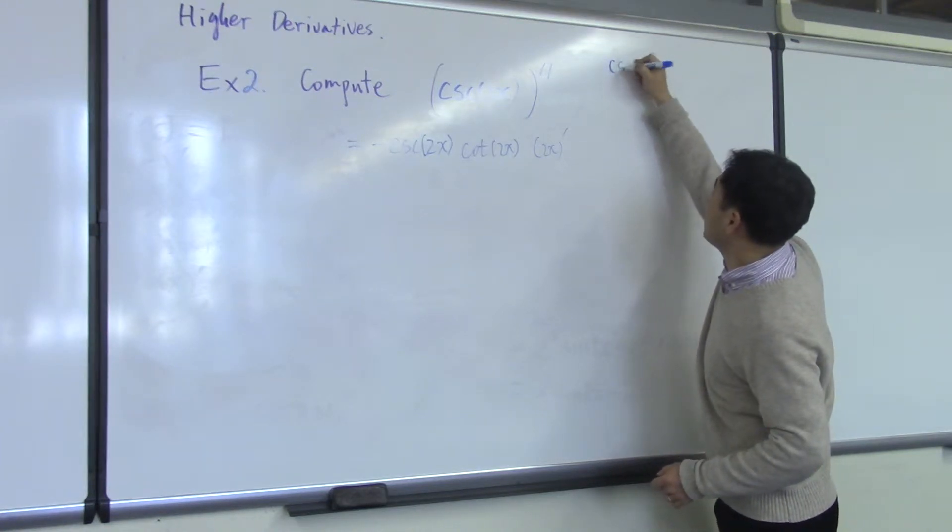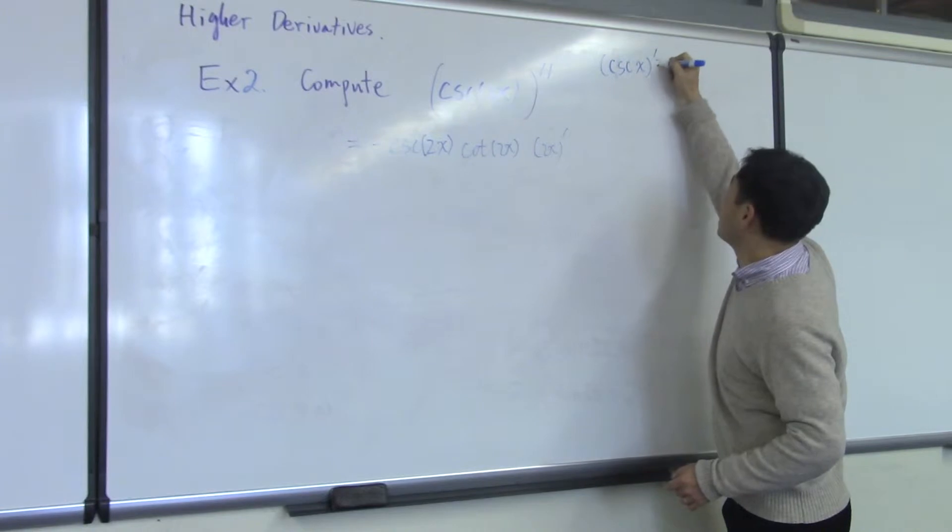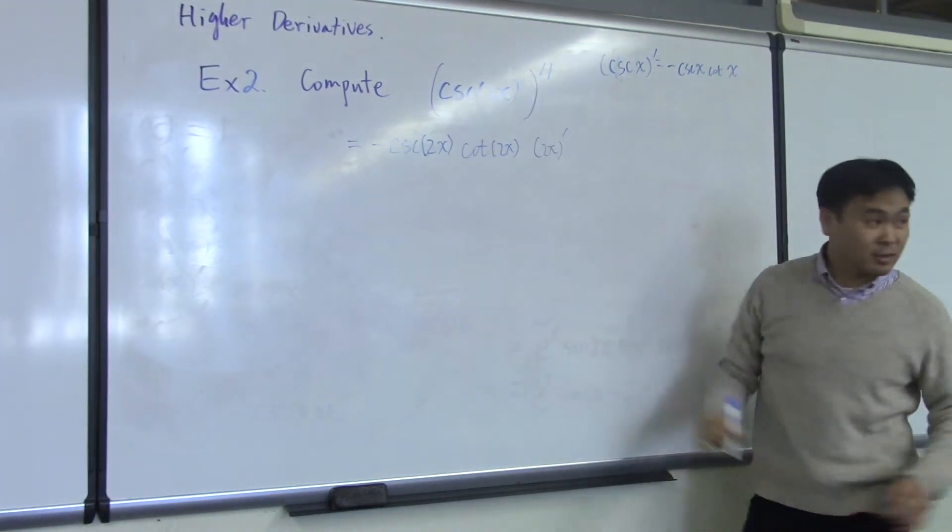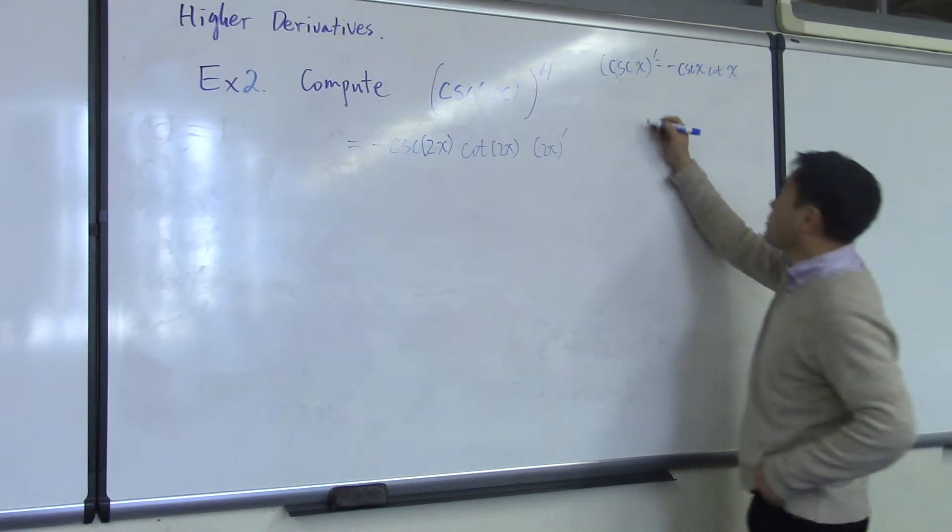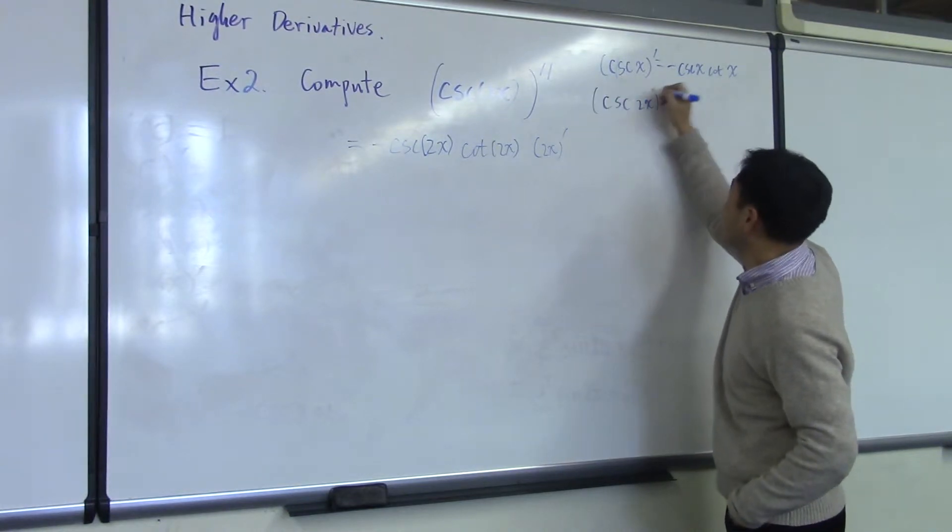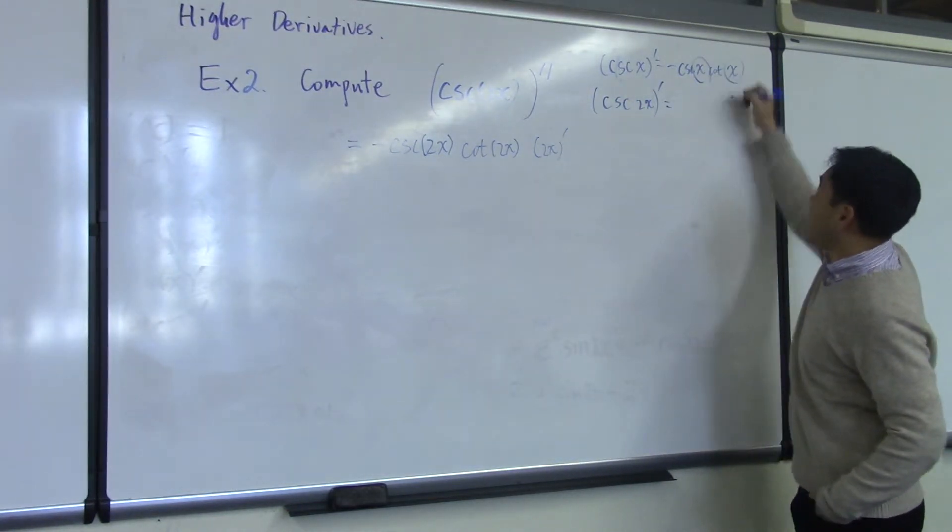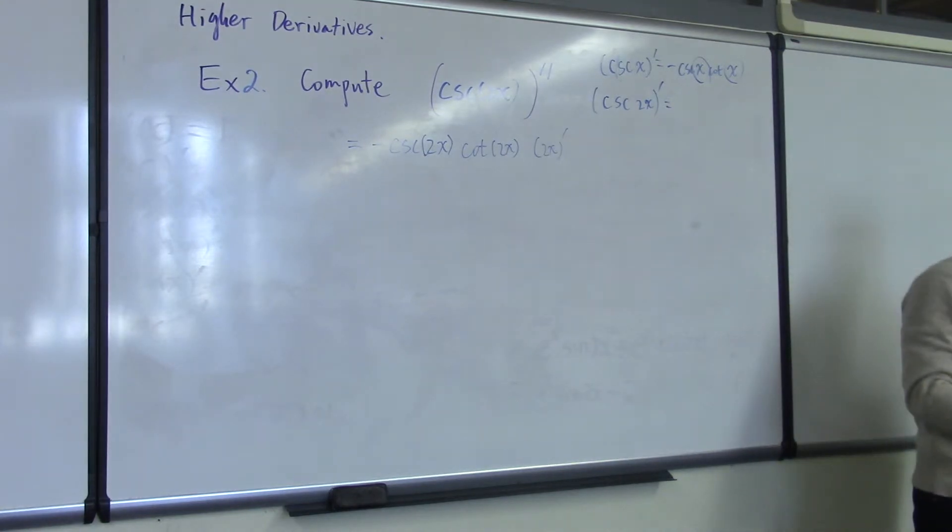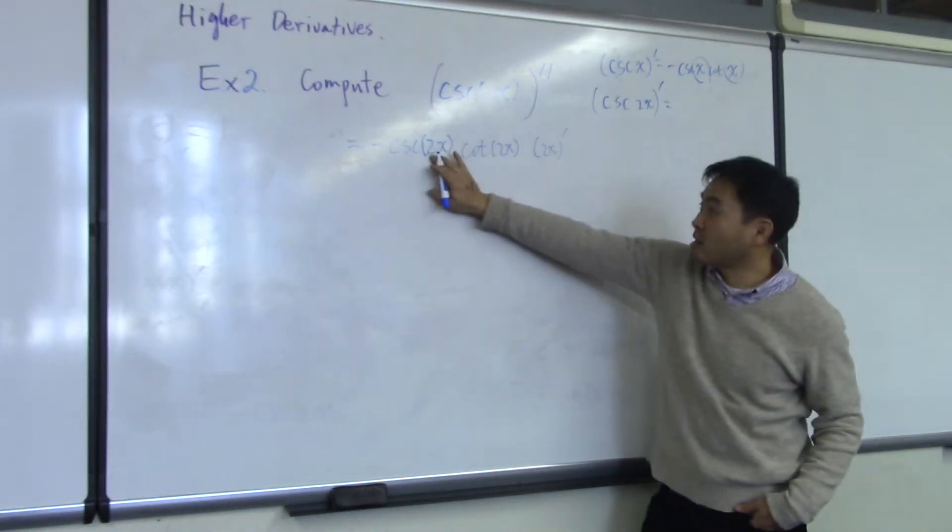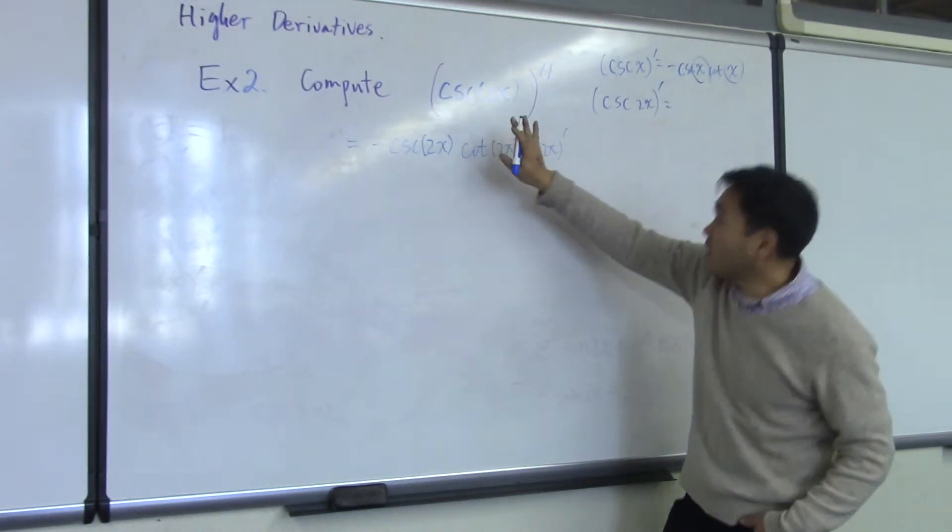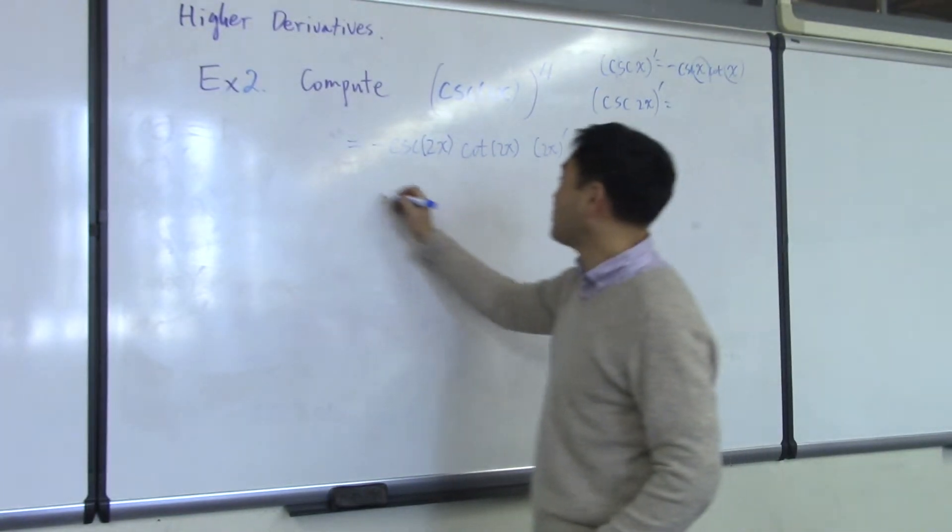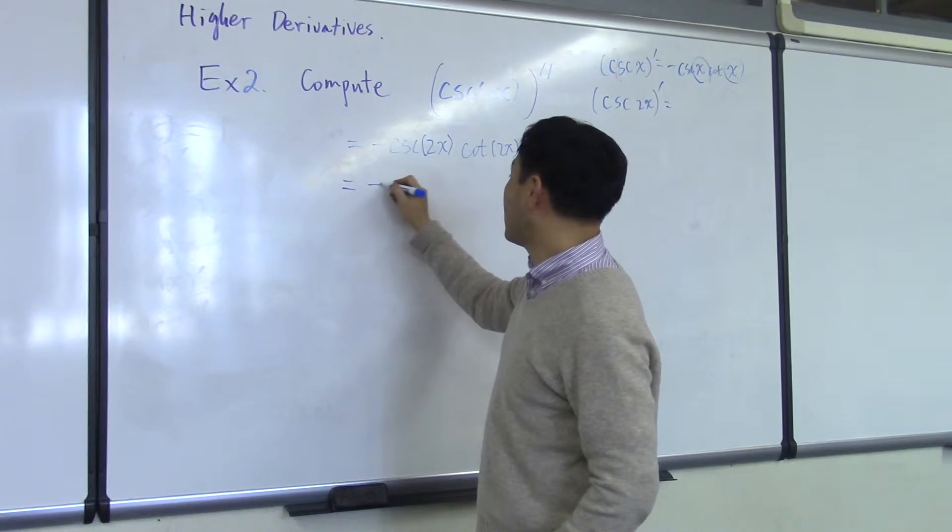The rule is: cosecant of x prime is negative cosecant of x cotangent of x, right? So therefore, if you're doing cosecant of 2x, just like this, then both of these x's must be replaced by 2x because you're replacing x by 2x. That's what I'm trying to say here. That's why both of them are replaced by 2x, and then 2x is pulled down and differentiated. Let's see what we have.